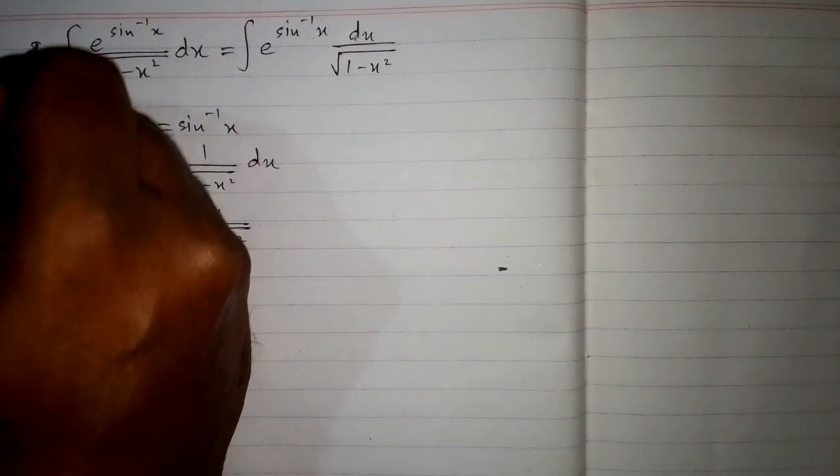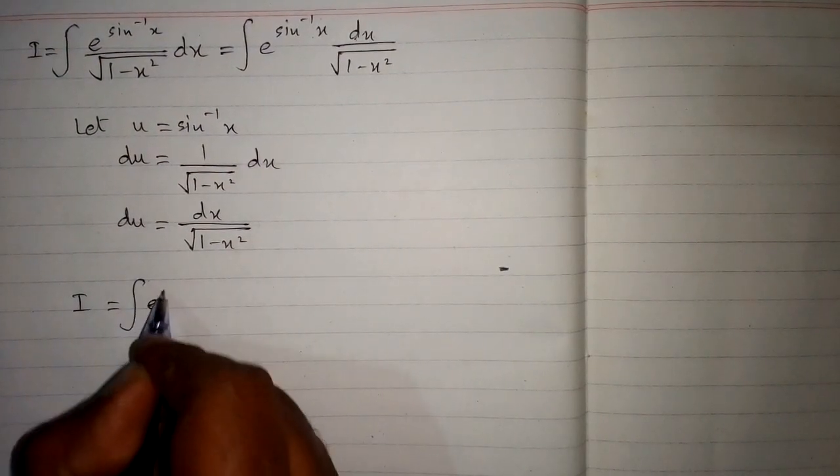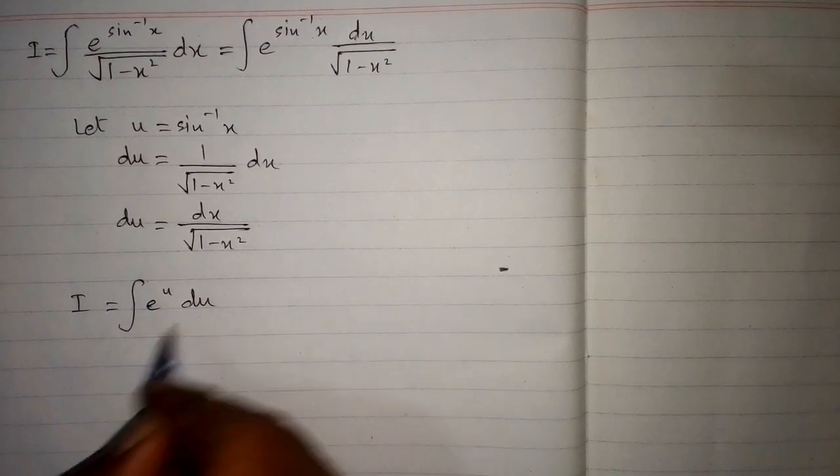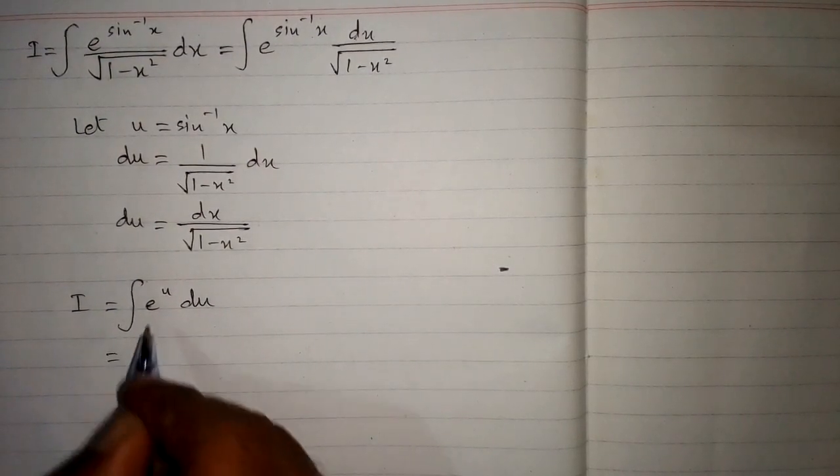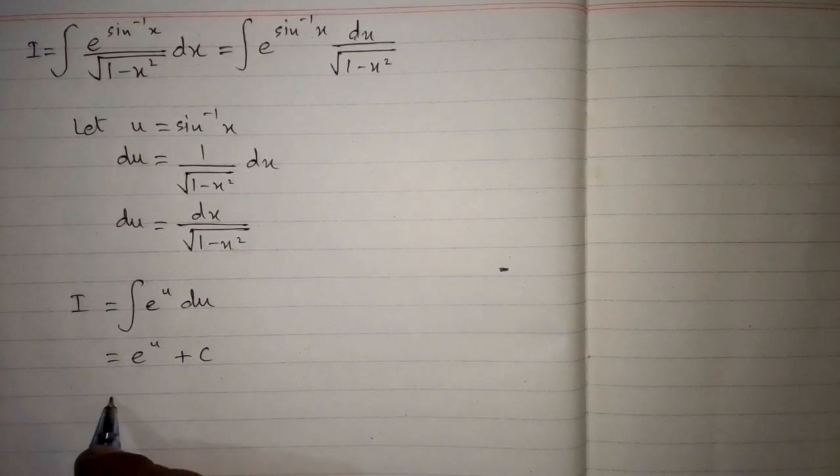So the above integral I will become integral of e to the power u du, and the integral of e to the power u is e to the power u plus c, where c is the constant.